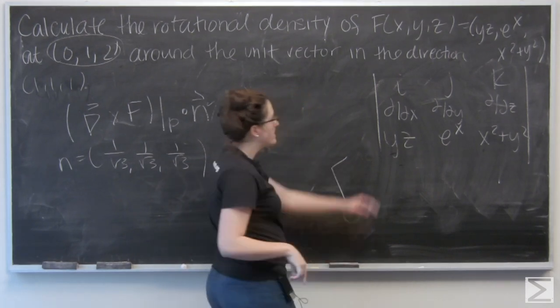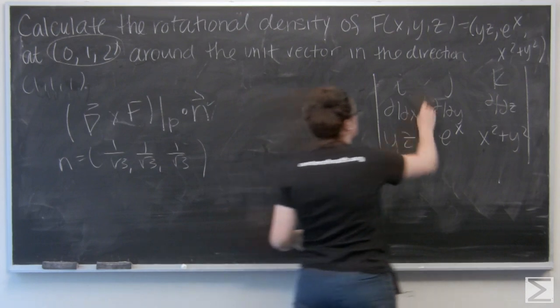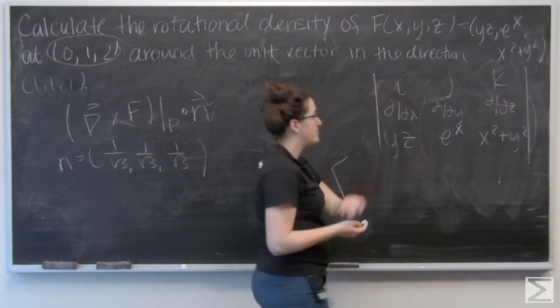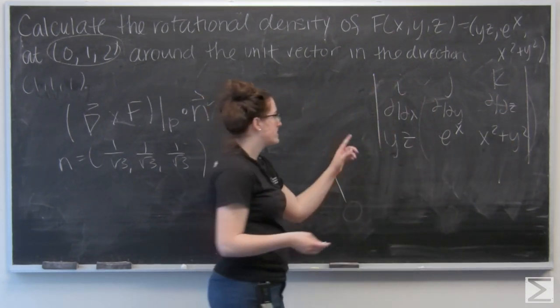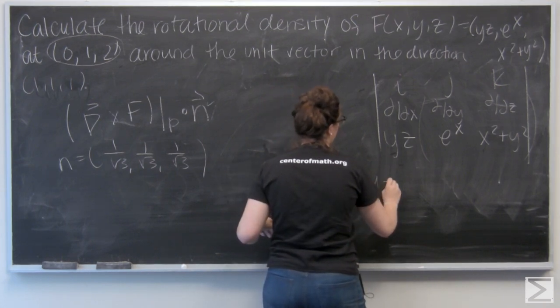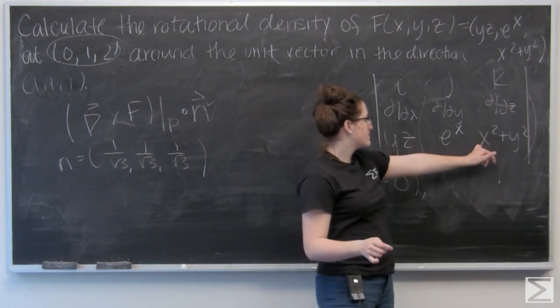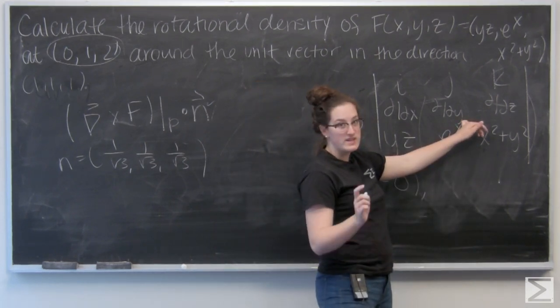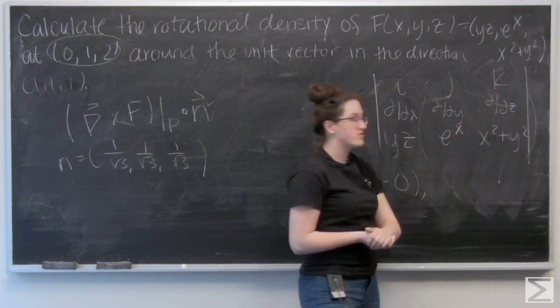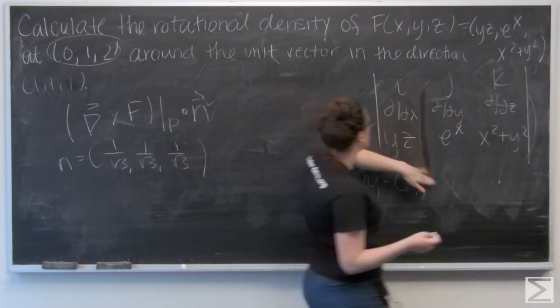And then I'm going to use a cofactor expansion to find this vector. So for the i component, I'm going to cut the top row and the leftmost column, take the determinant of this 2 by 2 matrix. So I'm going to get 2y minus 0. The partial derivative of x squared plus y squared with respect to y is 2y, and then subtract the partial derivative of e to the x with respect to z, which is 0.